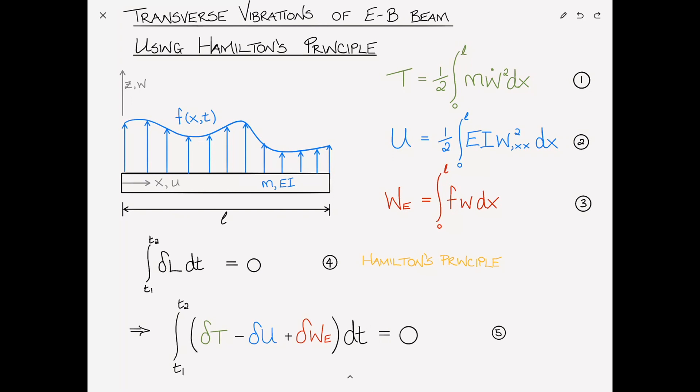I want to remind you that in terms of the calculus of variations, the kinetic energy T is a function of W-dot, which in turn is a function of time. We don't take the variation of the independent variable, in this case T, but only of the dependent variables. So by inspection, the variation of the kinetic energy is equal to M W-dot delta W-dot.